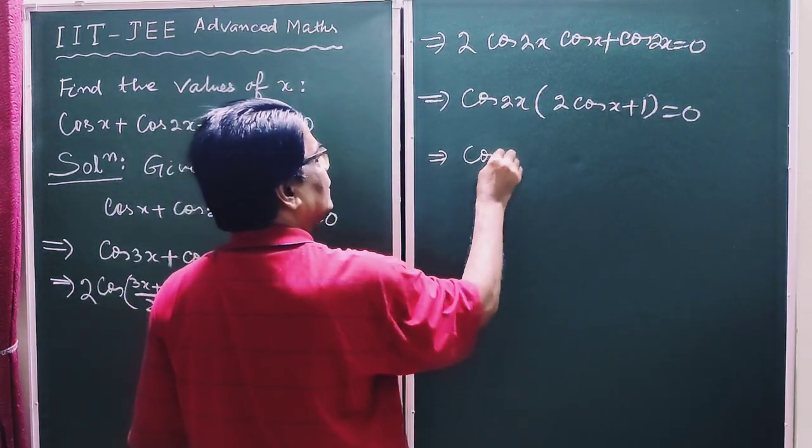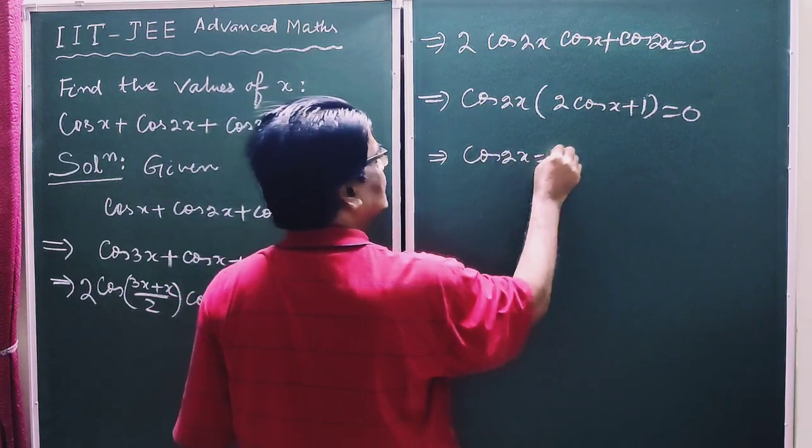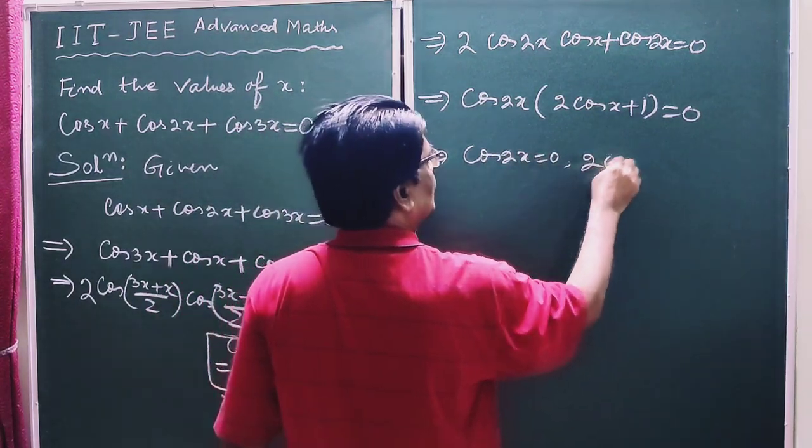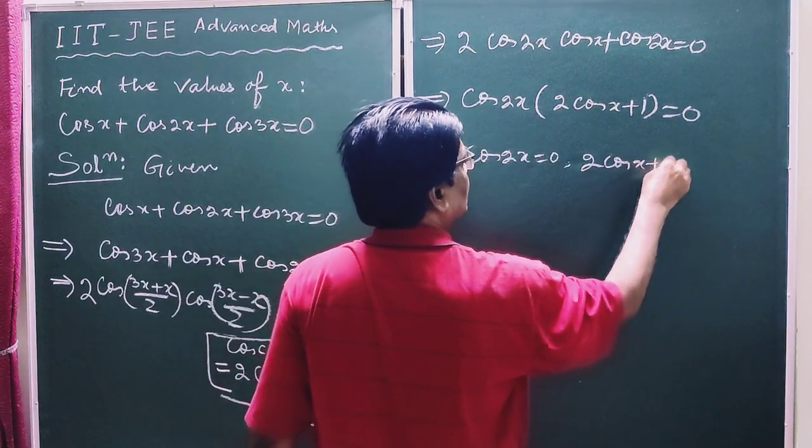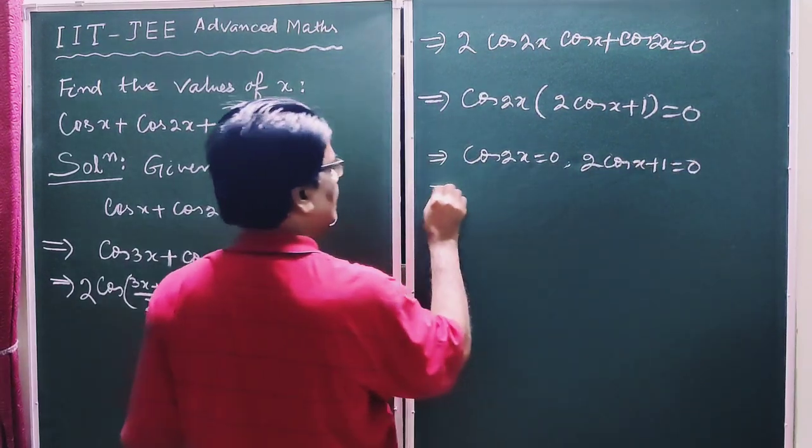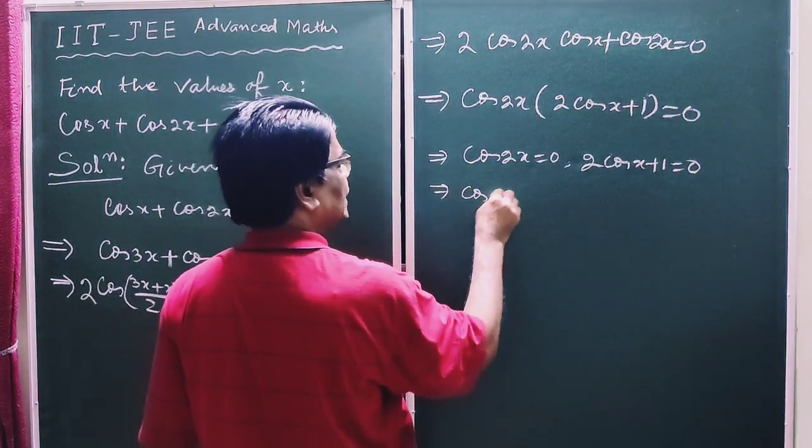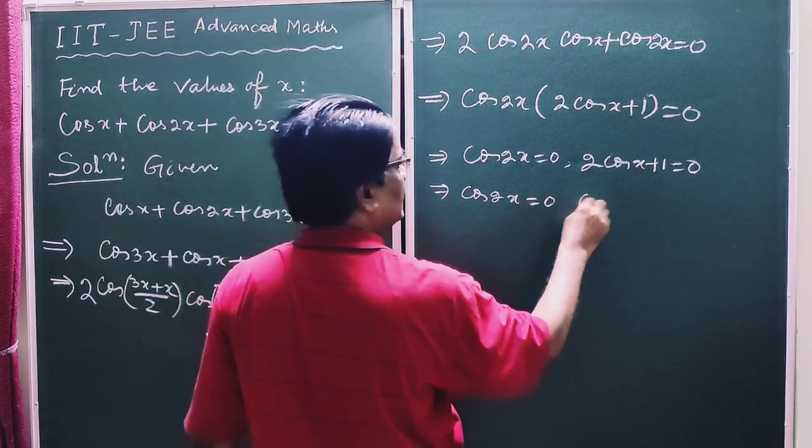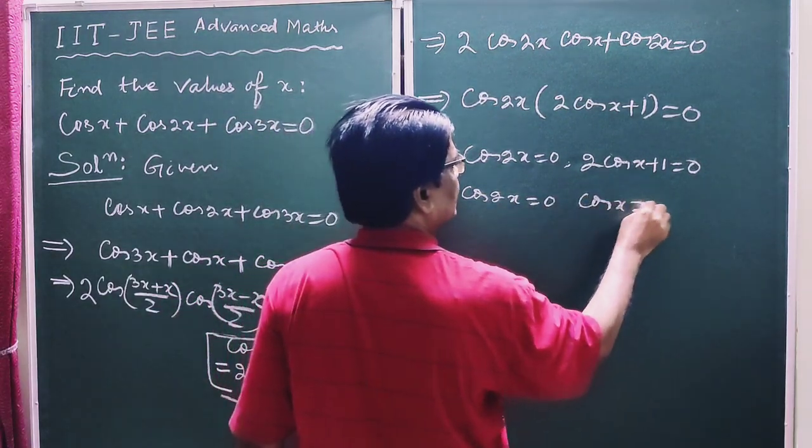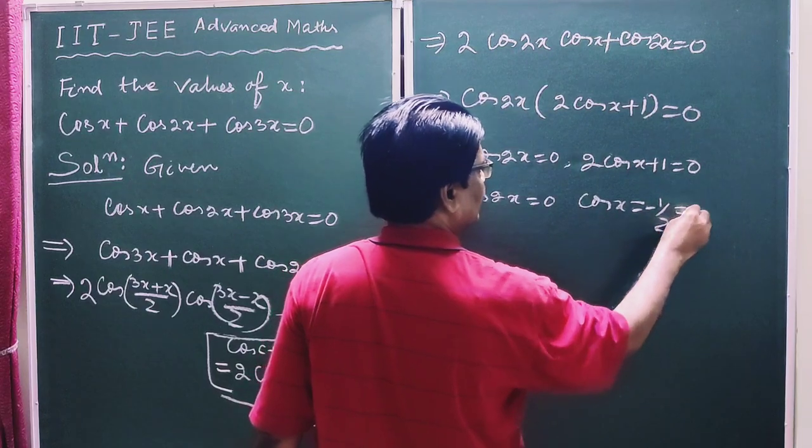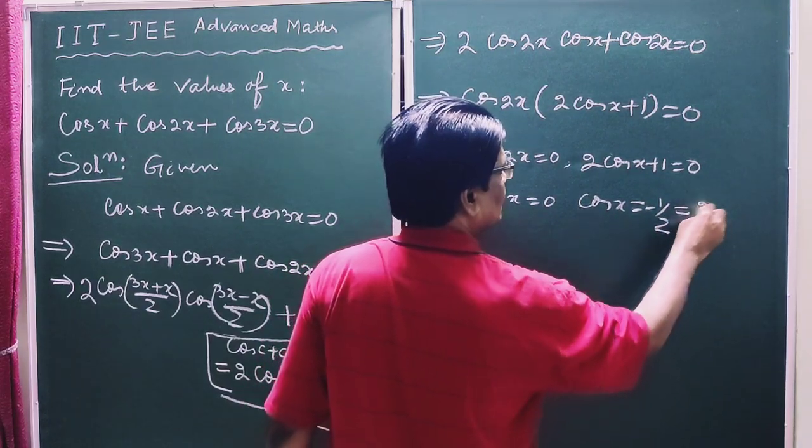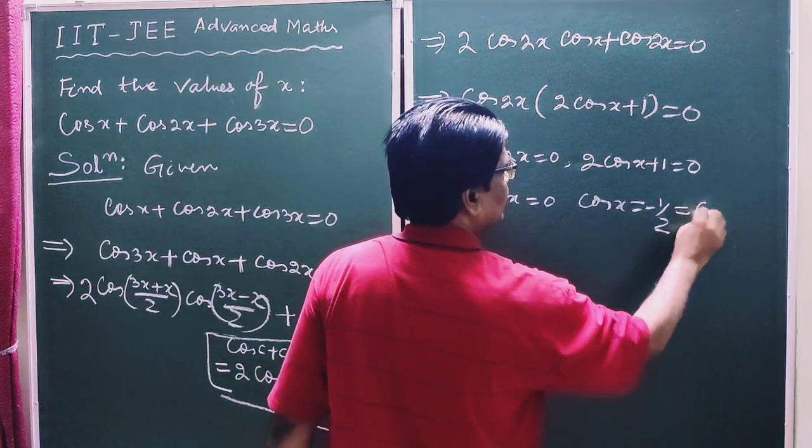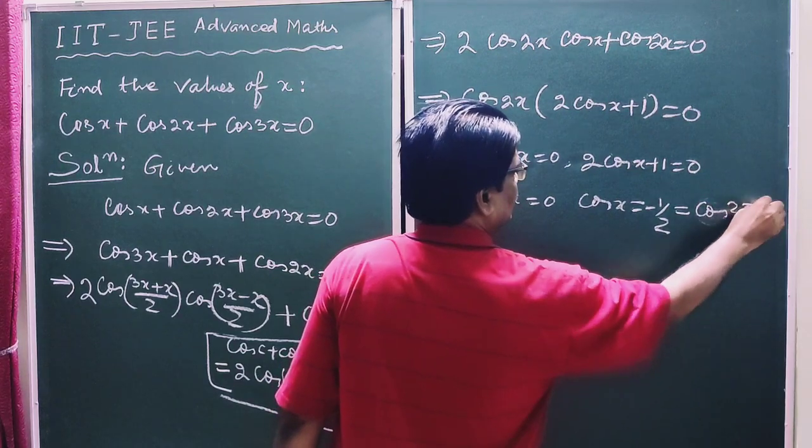This implies cos 2x equals 0 and 2 cos x plus 1 equals 0. Now cos 2x equals 0, and from 2 cos x plus 1 equals 0, we get cos x equals cos 2 pi by 3.